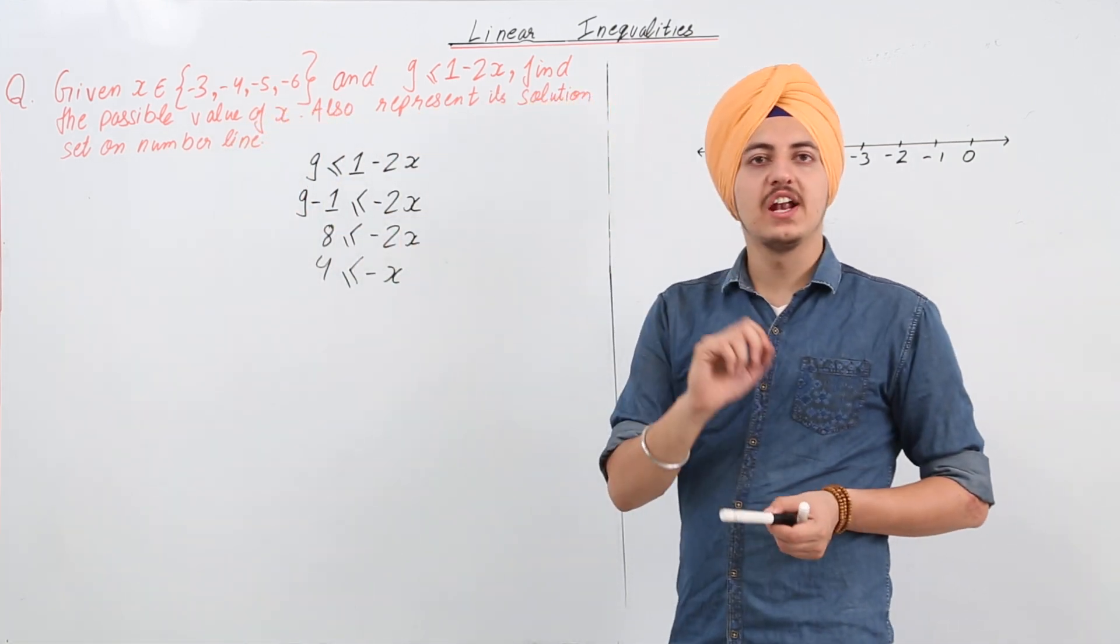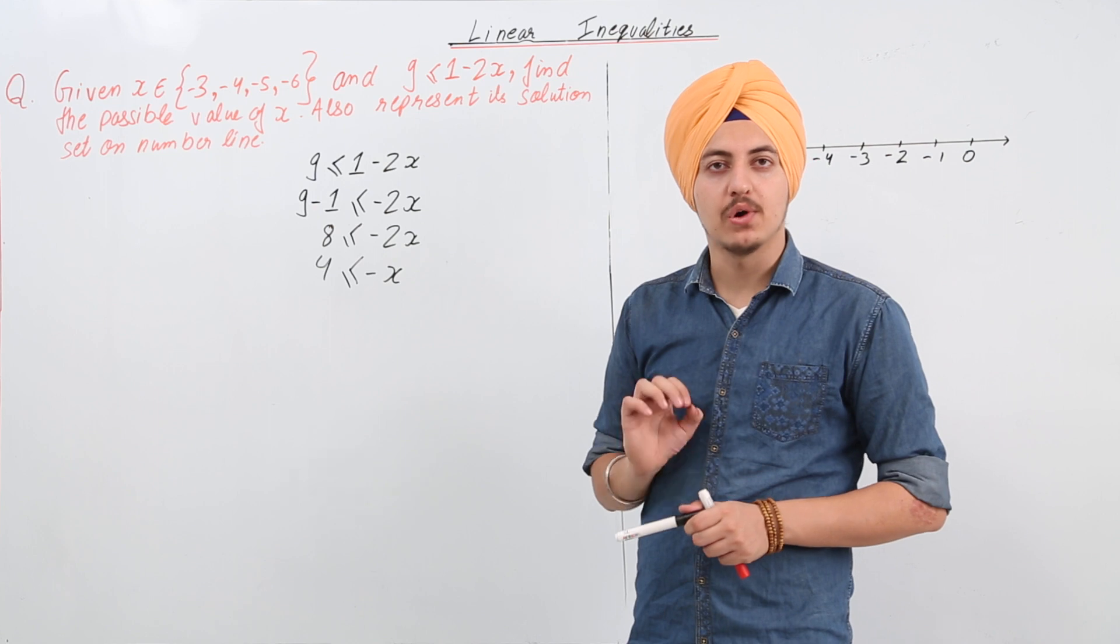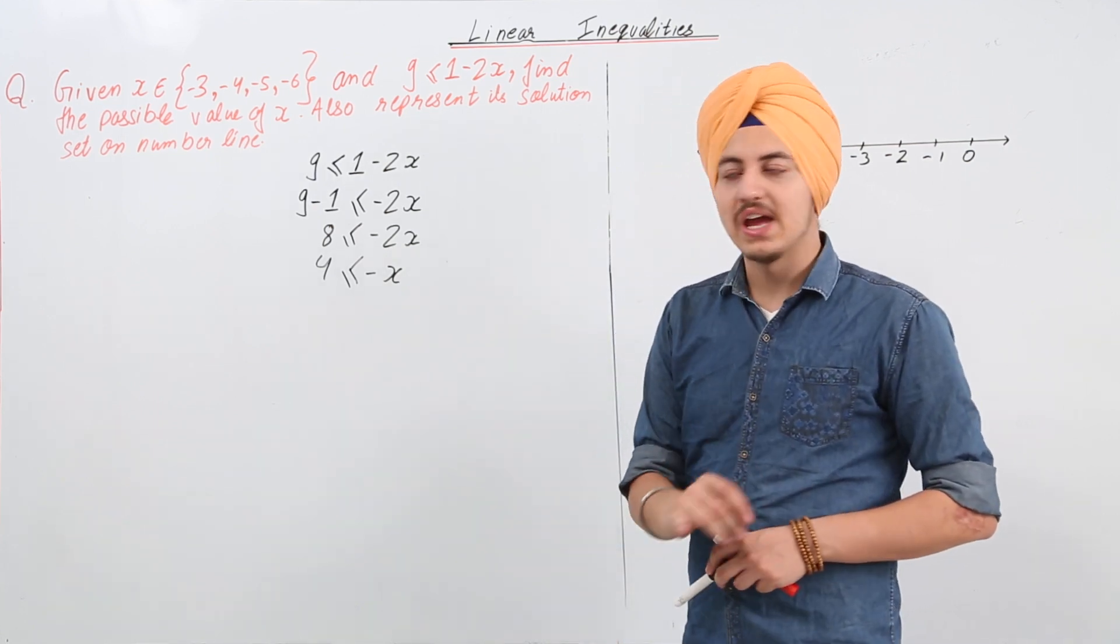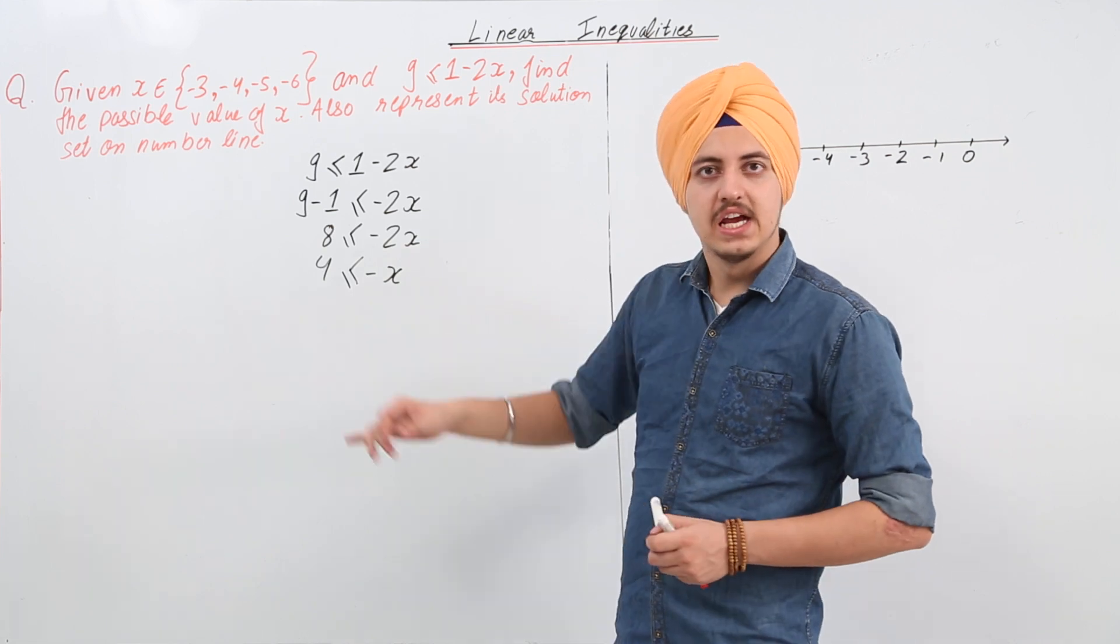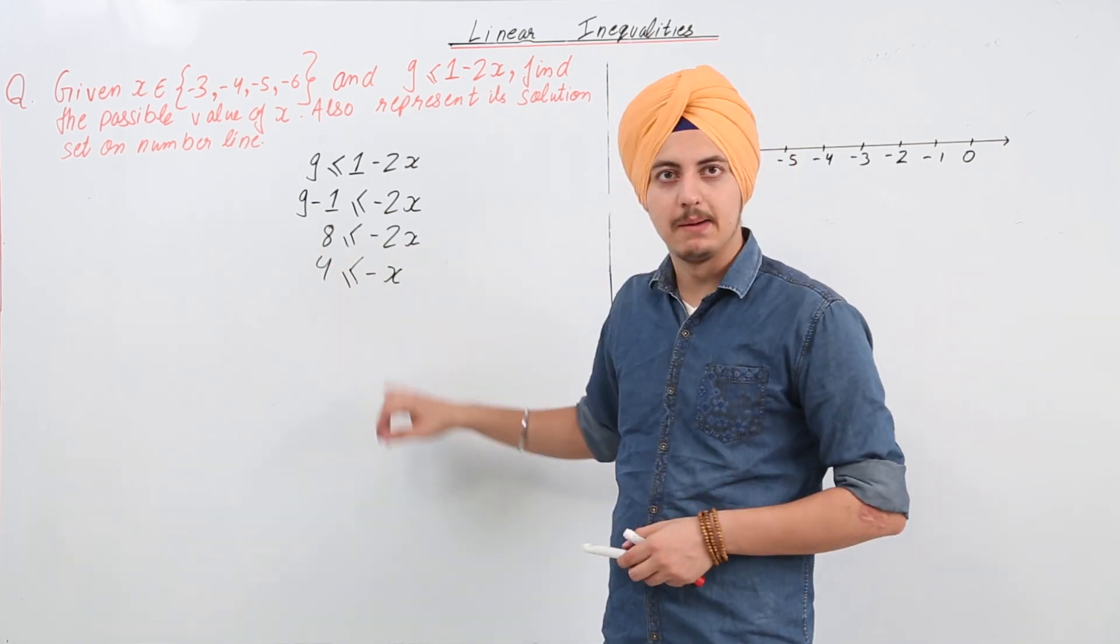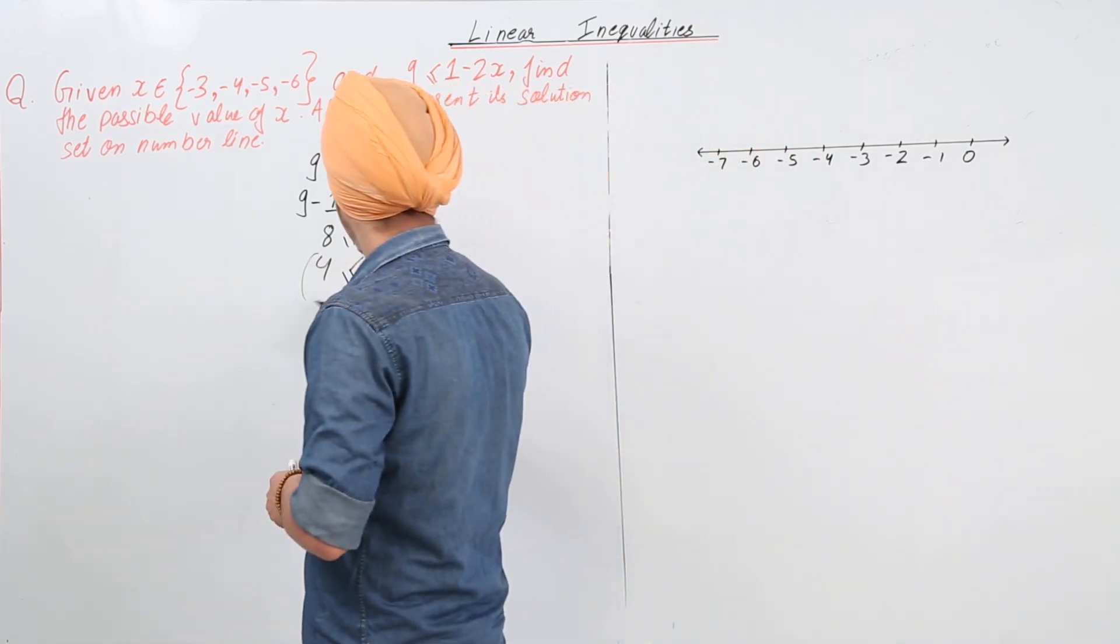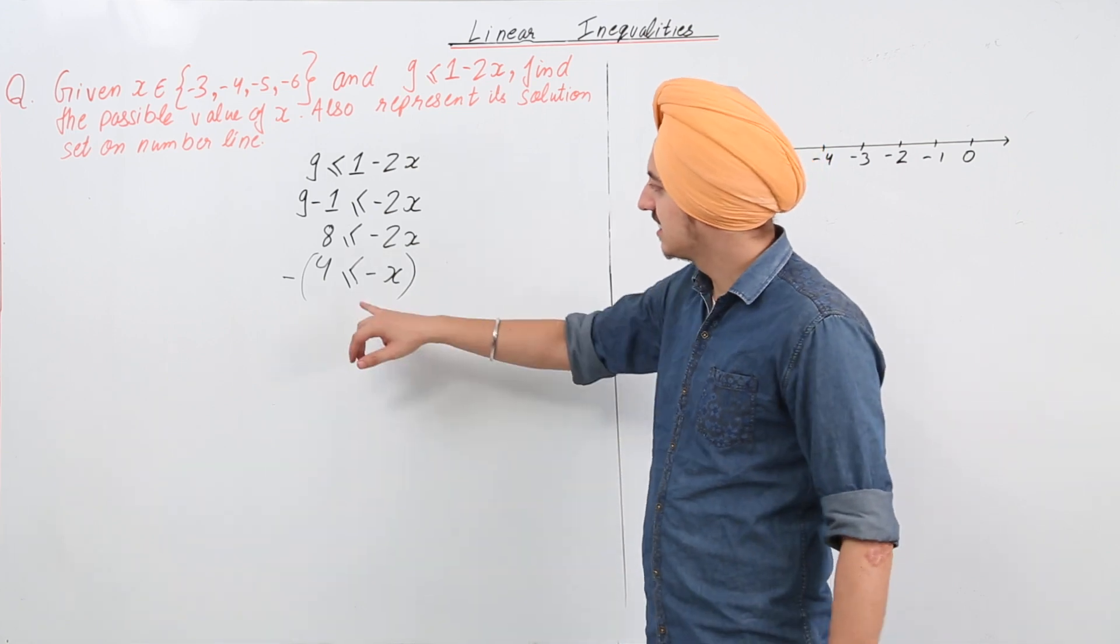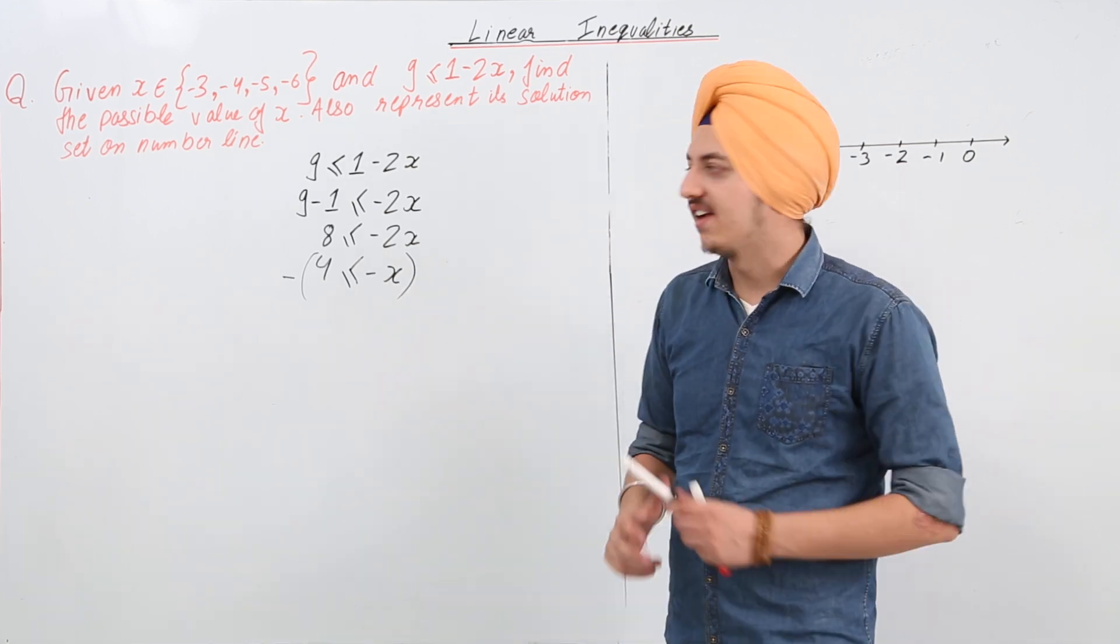Now we have one very important rule in inequalities that whenever there is a minus sign and we have to remove it, we multiply the whole equation by a negative sign. What happens is that the inequality changes itself.